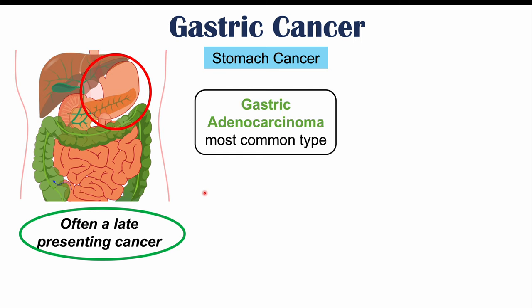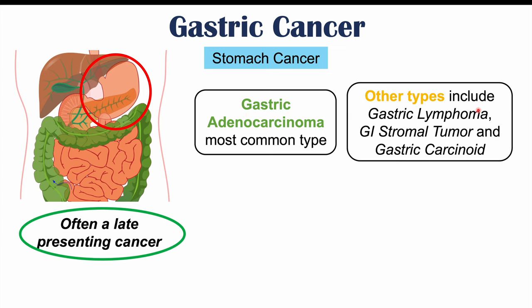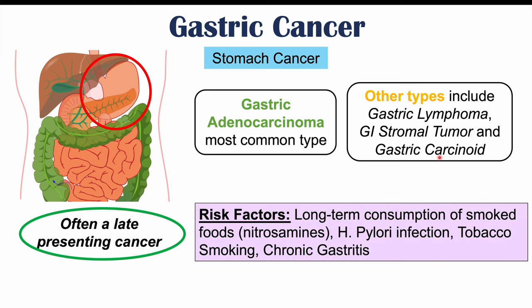Stomach cancer or gastric cancer is a cancer of the stomach, involving a cancerous mass in the stomach or in the tissues of the stomach. Stomach cancer is often a late-presenting cancer, meaning it only presents to healthcare providers in a later stage. Oftentimes in earlier stages of gastric cancer, the signs and symptoms are going to be mild or insignificant. There are multiple types of stomach cancer.